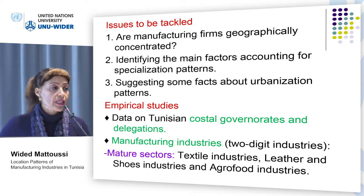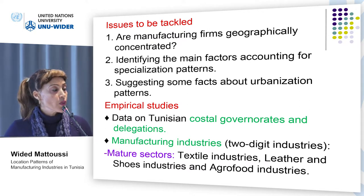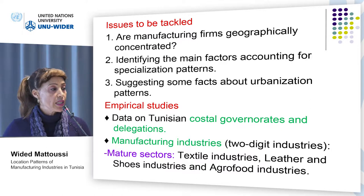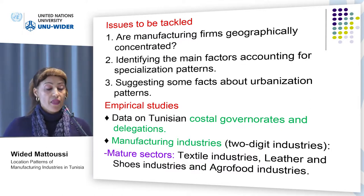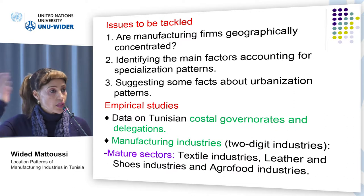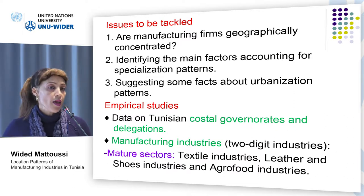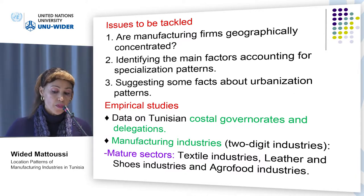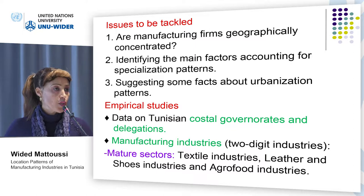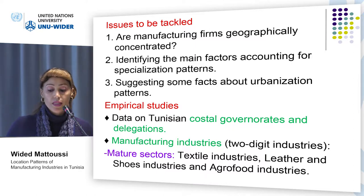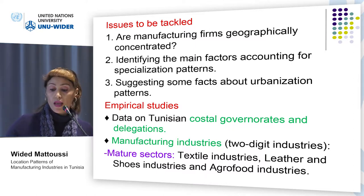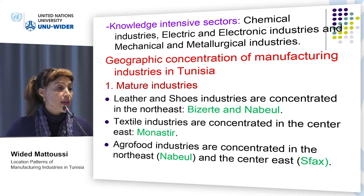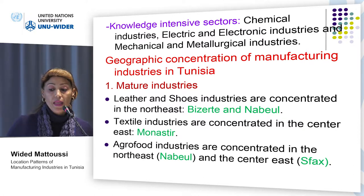The three empirical studies have mainly focused on testing whether dynamic externalities account for economic growth. They use data on Tunisian coastal governorates and delegations. The main manufacturing industries involved are divided into mature industries including textile industries, leather and shoes industries, and agro-food industries, and knowledge-intensive industries including chemical industries, electric and electronic industries, and mechanical and metallurgical industries.